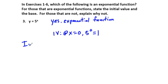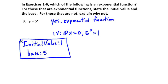So the initial value is 1. And base? Well, the base is what is being taken the exponent of. We're going to have 5 to the x power, so our base is going to be 5. Initial value 1, base of 5, that would be our answer.